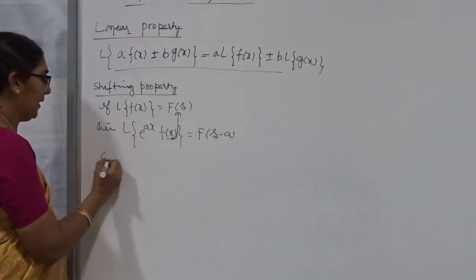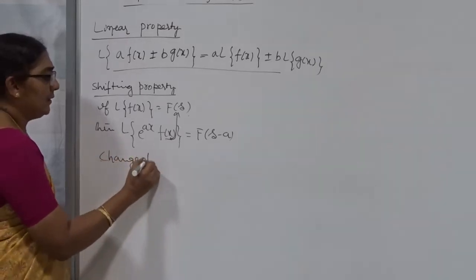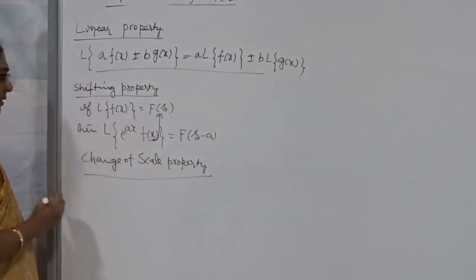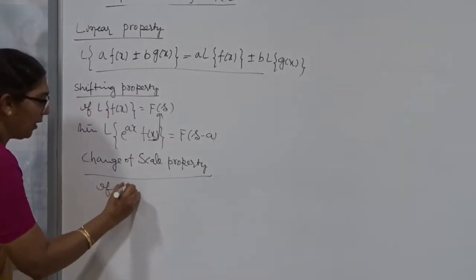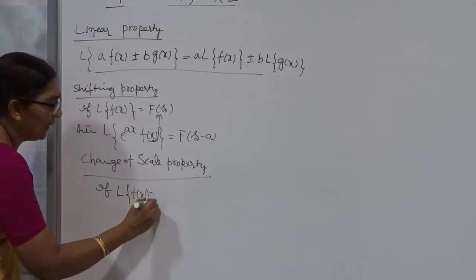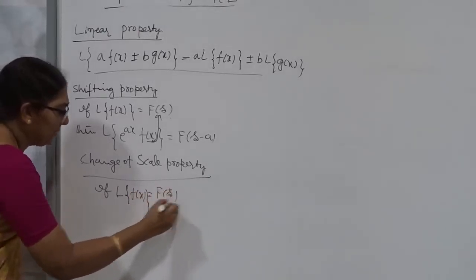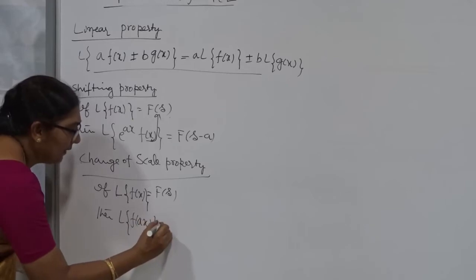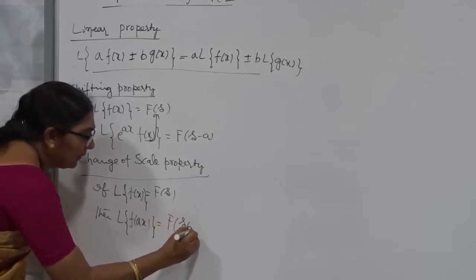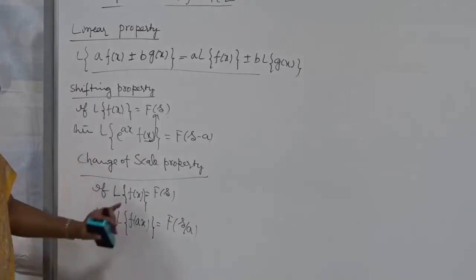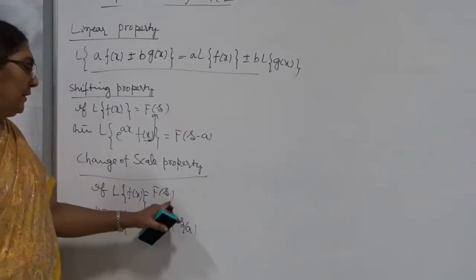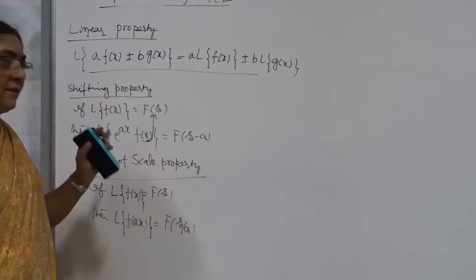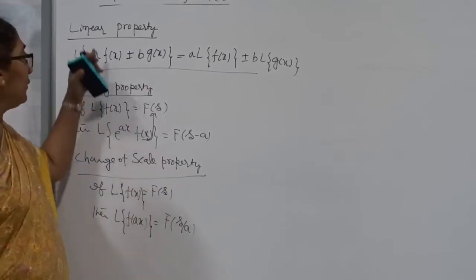Next is the change of scale property. If the Laplace Transform of f(x) is F(S), then the Laplace Transform of f(ax) is (1/a)·F(S/a). This means you find the Laplace Transform of the function without the scaling, and then replace S by S divided by the coefficient of x. We are not going to use the change of scale property very often — it is rarely used — but the first two properties are very, very important.